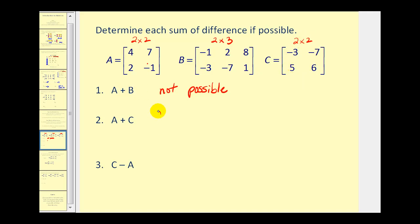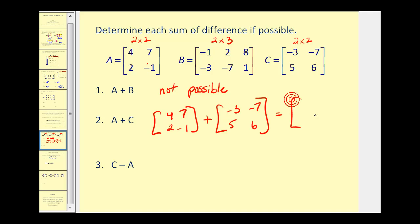The result will have the same dimension, and now we just add the corresponding elements, or the elements in the same positions. So we'll have four plus negative three, that would be one. Seven plus negative seven, that's zero. And two plus five, that would be seven. And negative one plus six is equal to five.